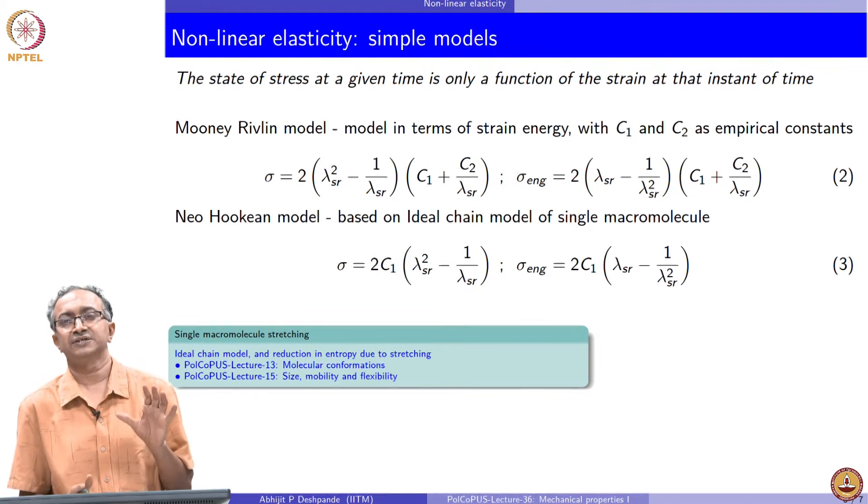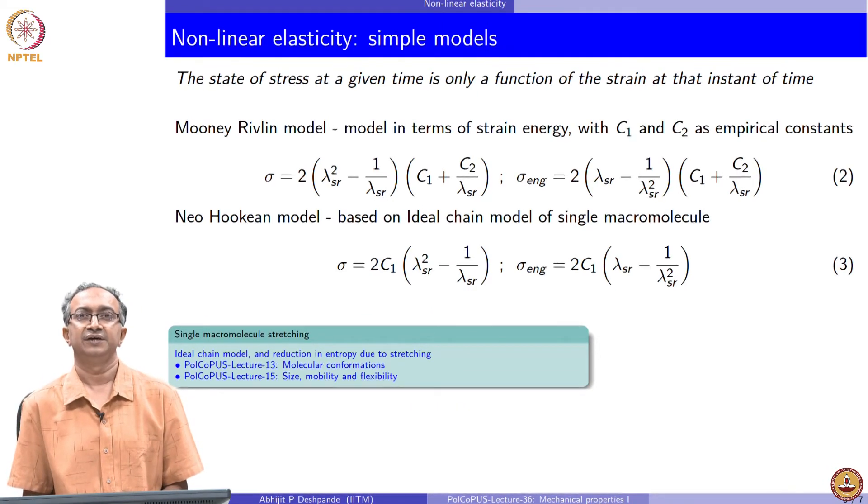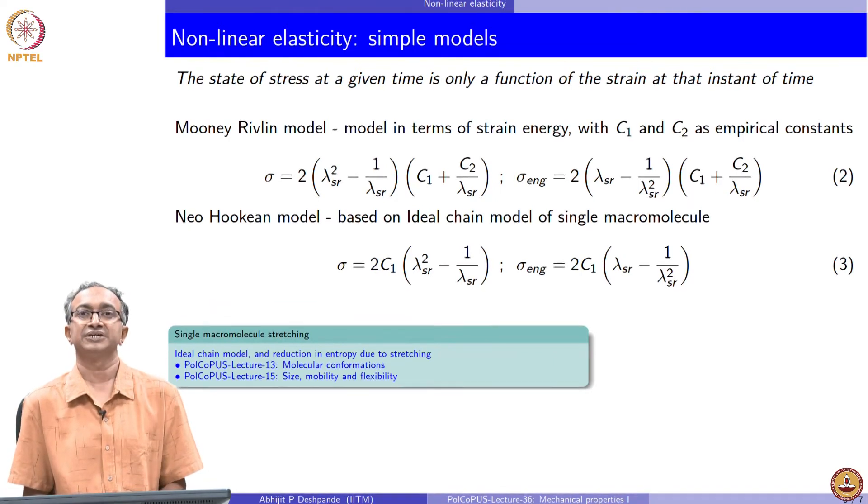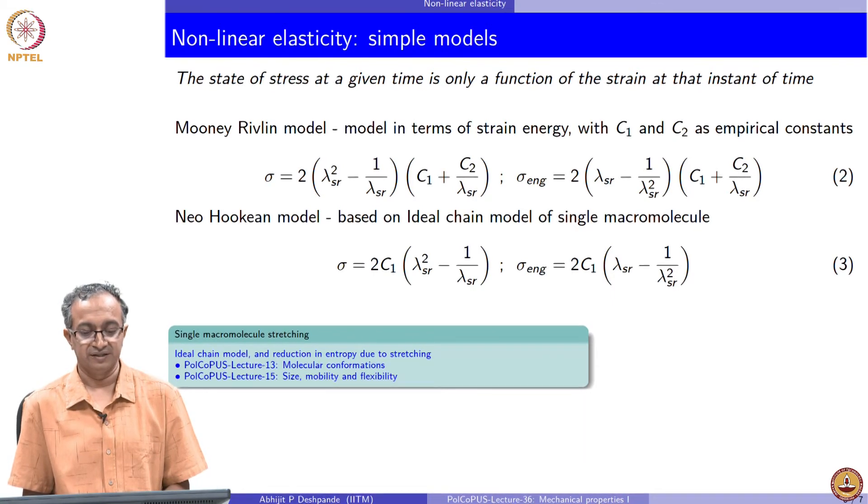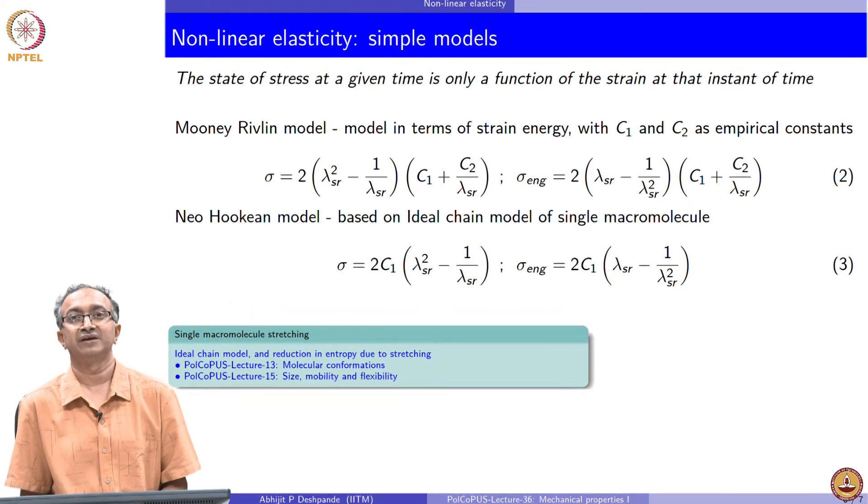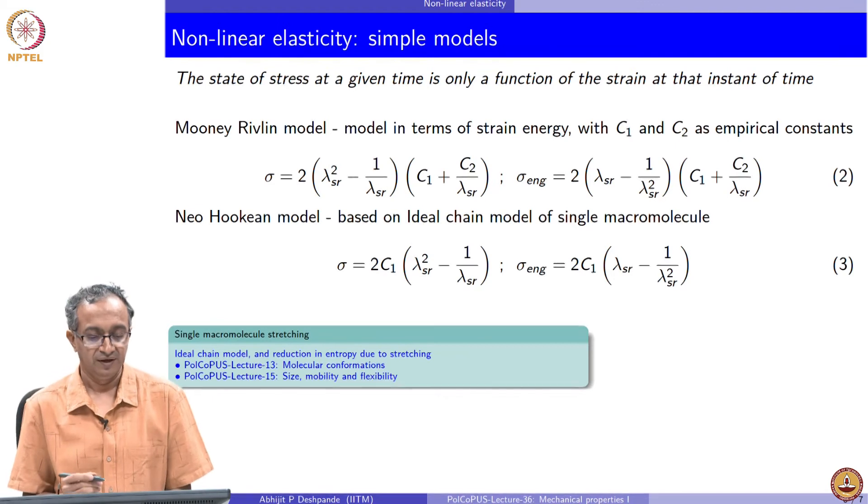We will close this lecture by just quickly looking at two different models for describing the non-linear elasticity. You can as a first exercise to get familiar with these equations, ask the question, what happens if the deformation is small? If deformation is small, then lambda which is the stretch ratio will be basically 1 plus epsilon and epsilon is a very small quantity. You can substitute 1 plus epsilon for lambda in these equations and try to simplify and convince yourself that both of these will reduce to Hooke's law. These are equations which are valid for arbitrarily large deformations because they are describing the rubber behavior. But if you look at exceedingly small deformation at very small deformation again Hooke's law will be valid.